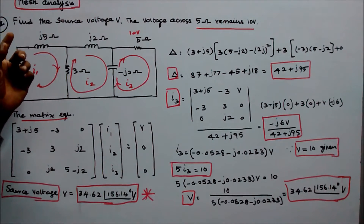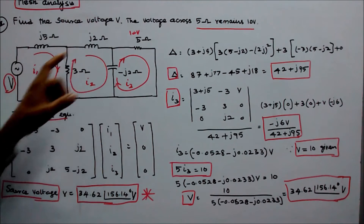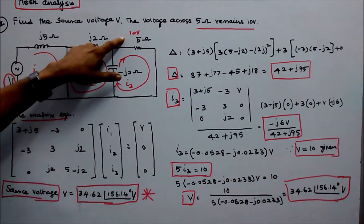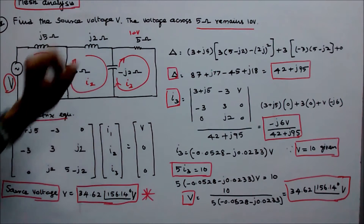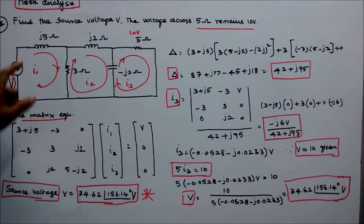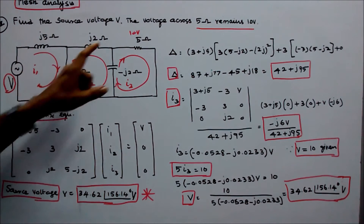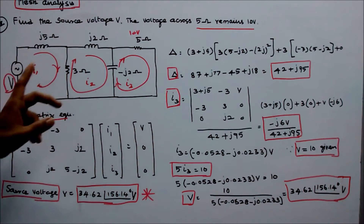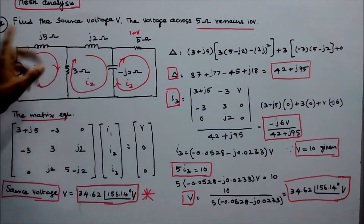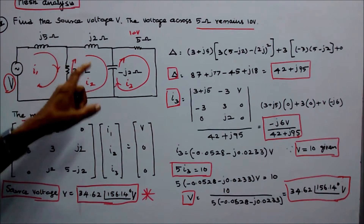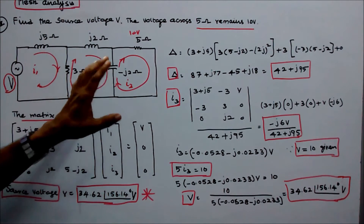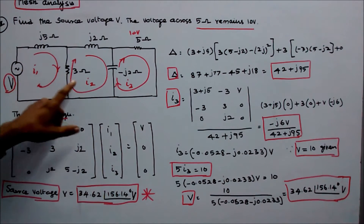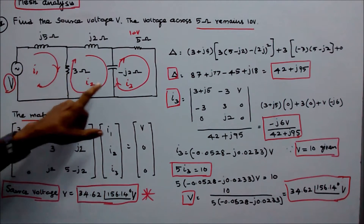Problem number two: Find the source voltage V, given that the voltage across the 5 ohm resistor is 10 volts. The circuit consists of two resistors (5 ohm and 3 ohm), two inductive reactances (j2 ohms and j5 ohms), one capacitive reactance (minus j2 ohms), and three loops. Loop currents i1, i2, and i3 are all in the clockwise direction.